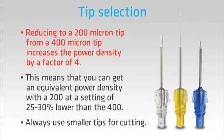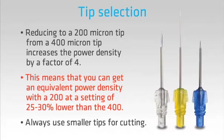When we change to a larger tip, the reverse is true — we spread the energy out in a greater space. This means you get similar power densities on tissues from lower power settings by using smaller tips. Always use smaller tips for soft tissue cutting. Keep the bigger tips for when you don't want to cut tissue, such as when troughing around a crown prep to get haemostasis or for periodontal disinfection.